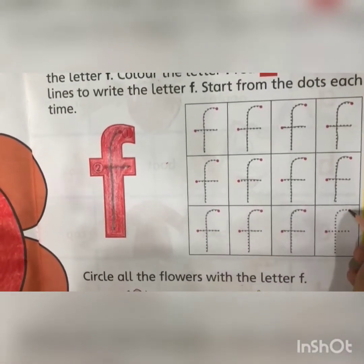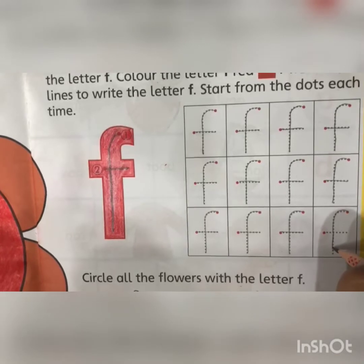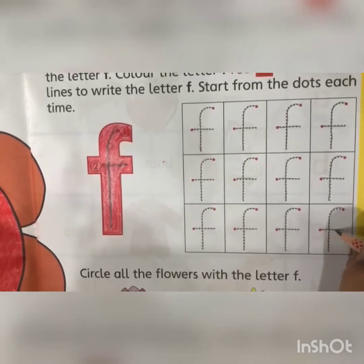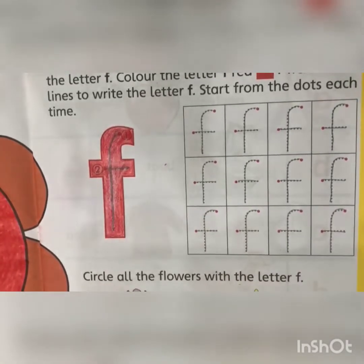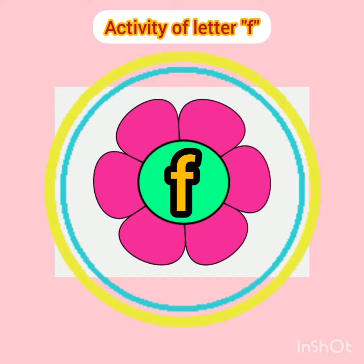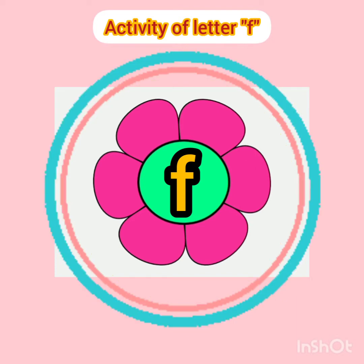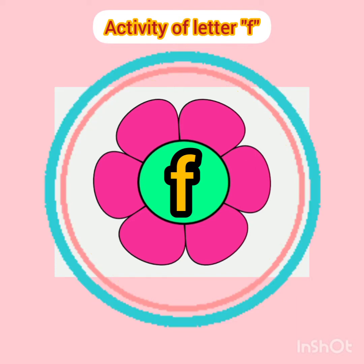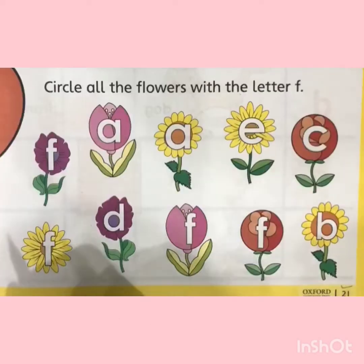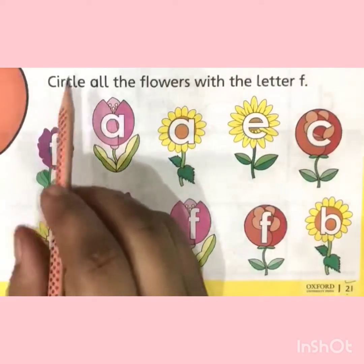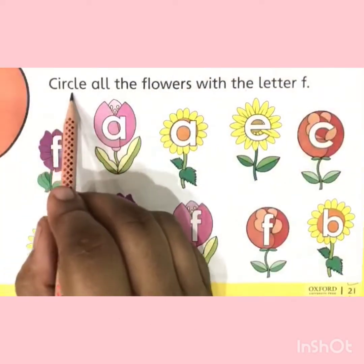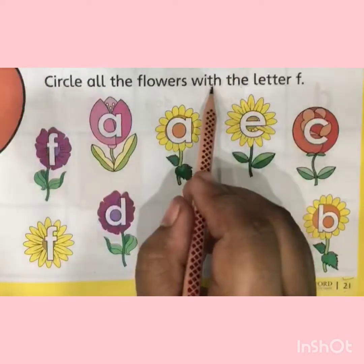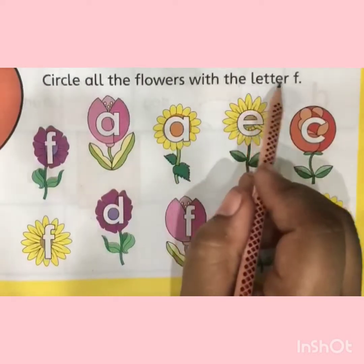Well then dear kids, we are done. Now you will perform an activity related to the letter F. In this activity, you will find out the letter F in different flowers. The statement is: circle all the flowers with the letter F.